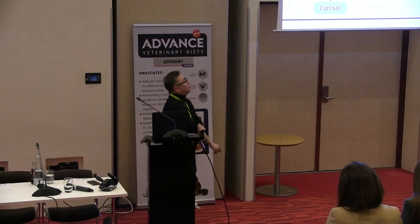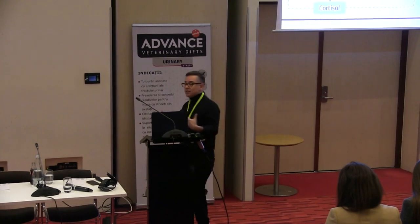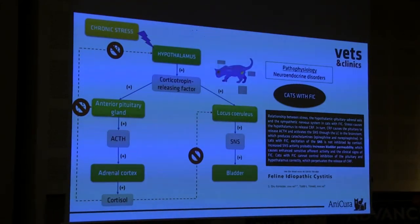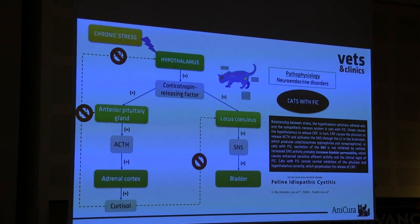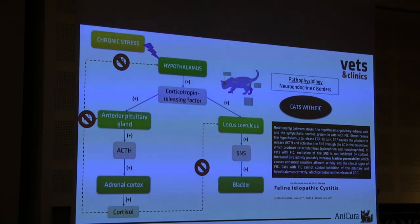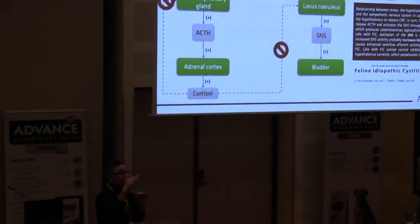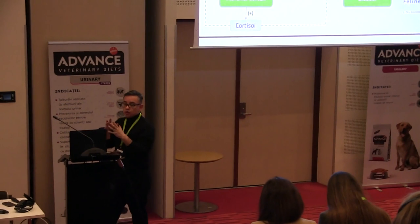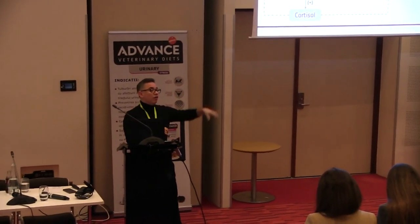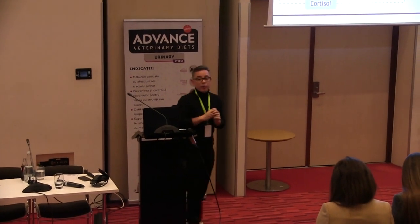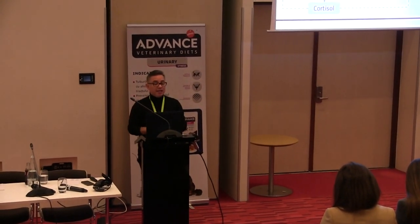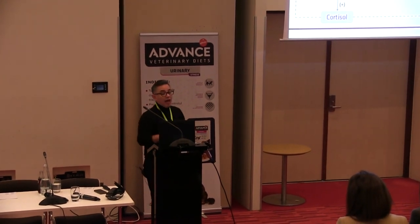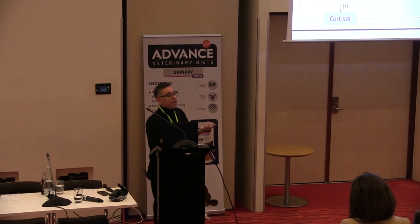What happens in a cat with idiopathic cystitis? Everyone thinks this cat is not adequately prepared to respond to stress. When this cat produces cortisol, the cortisol level is low — within normal limits, but low. This level of cortisol is unable to exert negative feedback over the pituitary gland and hypothalamus. For that reason, the system is constantly producing ACTH, norepinephrine, and epinephrine, and can produce all the changes we see in the bladder.